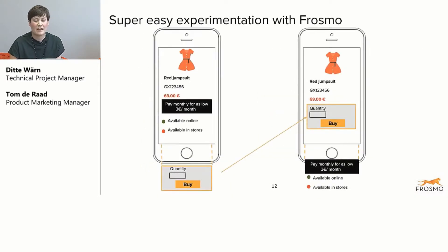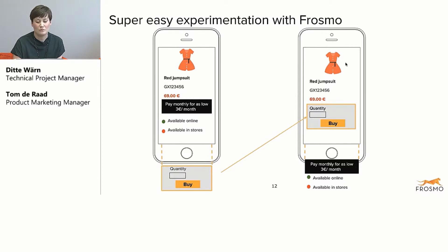Here are a few visual examples of what we could test. Here's a layout experimentation: in one version we have the call to action button quite low, so it's kind of underneath the fold, meaning you're not really able to see it when you first land on this mobile product page.